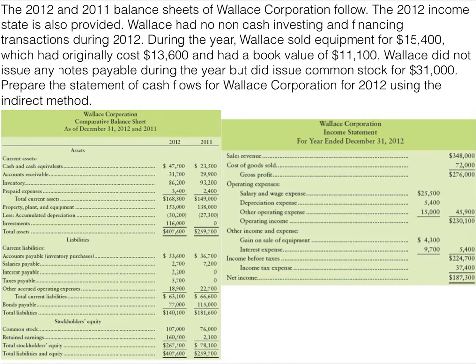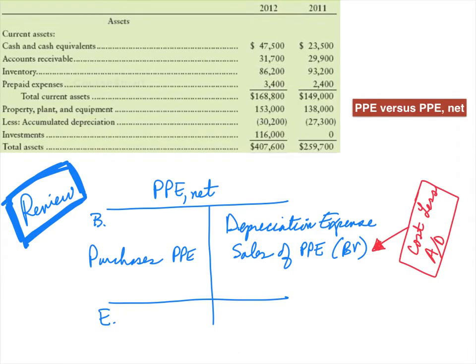In prior videos we talked about property, plant, and equipment net and what that meant. Notice in this balance sheet we're given property, plant, and equipment at cost as well as its accumulated depreciation account. You'll remember that property, plant, and equipment net meant that the accumulated depreciation account had already been taken out in that line item. Here we're given both of them. So let's review briefly the PP&E net account and what that looked like.